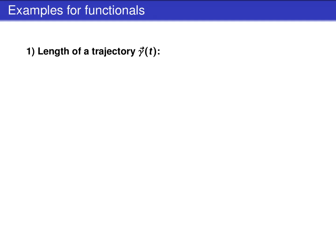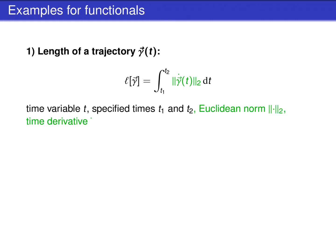Functionals are highly important in physics. A simple example for a functional is the length of a trajectory. Here, we have a trajectory gamma, which describes the position gamma vector of a particle as a function of time t. Then one can assign to each trajectory gamma the length l, which the particle travels along this trajectory between two time steps t1 and t2. This length is given as the integral of the speed of the particle over time t, from the start time t1 to the end time t2. The speed of the particle at a certain time t is given by the Euclidean norm of the time derivative of the position gamma at time t.